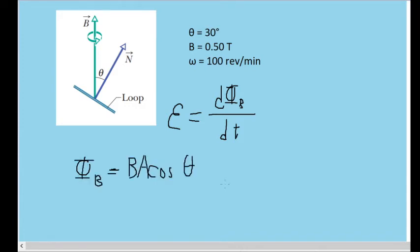The formula for magnetic flux is given by the magnitude of the magnetic field times the area of the loop times cosine of the angle between them. In other words, it's the dot product of the magnetic field and the area vector.